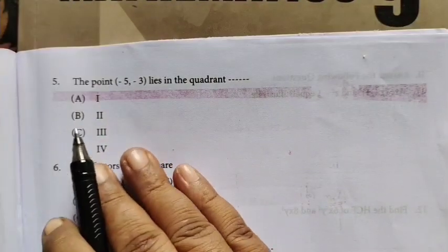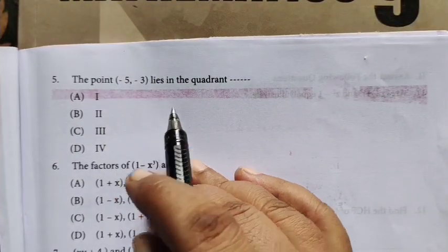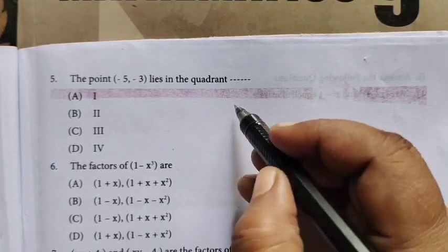Question number 5. The point minus 5 minus 3 lies in the third quadrant.